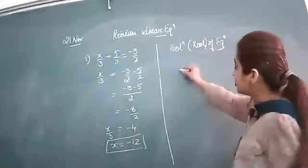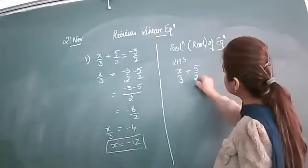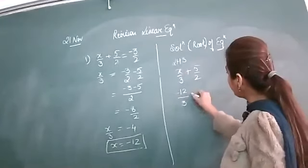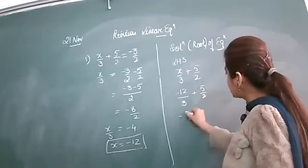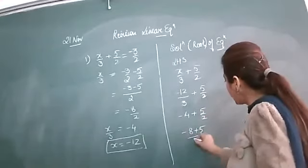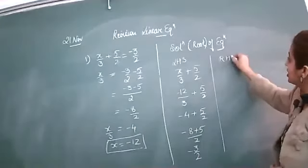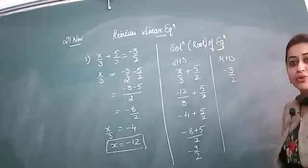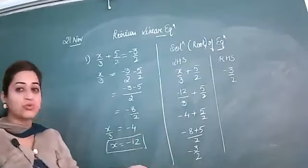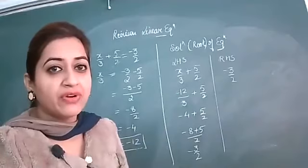Now do the checking part. Solve the left hand side and right hand side separately by substituting x equals minus 12. This gives minus 4 plus 5/2, which equals minus 8 plus 5 over 2, giving minus 3/2. The right hand side is already minus 3/2. So LHS equals RHS, confirming minus 12 is the solution.